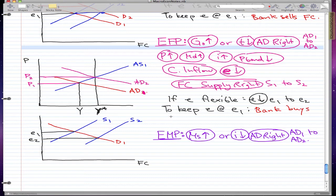What must the bank do? The bank has to buy the foreign currency. Bank buys foreign currency, and that will increase our demand from D1 to D2, so we get back to e1.